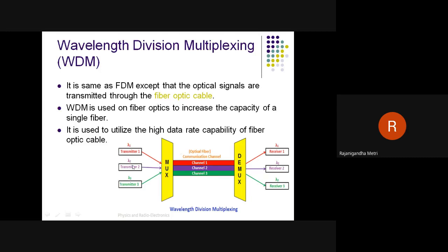WDM is used with fiber optics because it increases the capacity of a single fiber and utilizes the high data rate capability of fiber optics. Data is transmitted as optical signals with different wavelengths, shown as lambda 1, lambda 2, and lambda 3, so signals do not get mixed or interfere with each other.